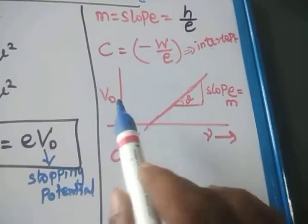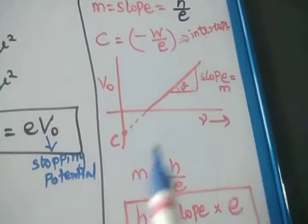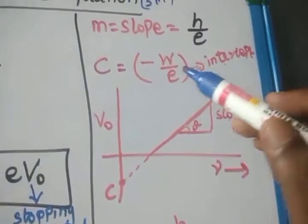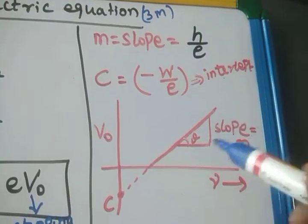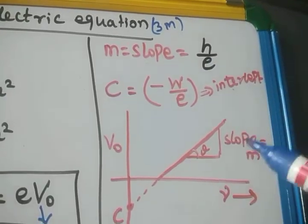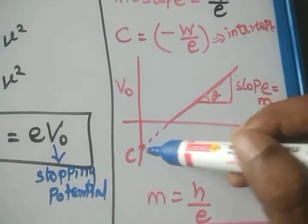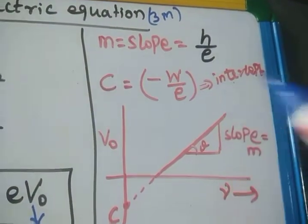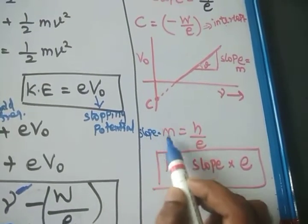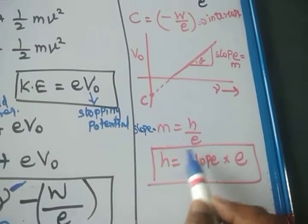If we draw the graph between stopping potential and incident frequency, it forms a straight line. The slope of this line equals M, which is equivalent to H/E — that is, Planck's constant divided by the charge of the electron. The intercept C is equal to minus W/E, where W is the work function, so the intercept equals minus work function divided by charge of the electron.